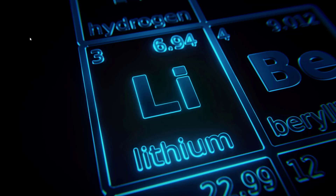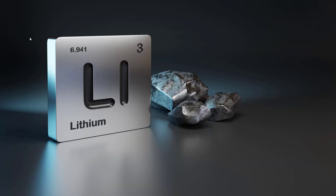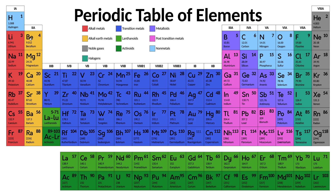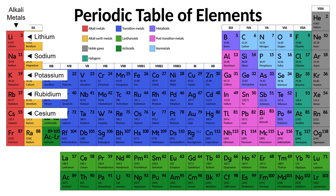Lithium, chemical symbol Li, atomic number 3, is a soft, silvery-white metal positioned at the top of group 1 of the periodic table, called the alkali metals group. This group or family is made up of six chemical elements: lithium at the top, sodium, potassium, rubidium, cesium, and francium.